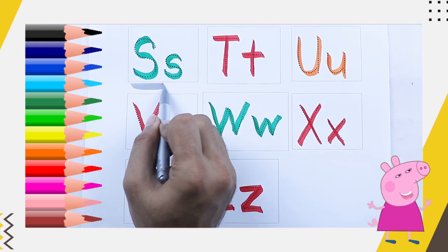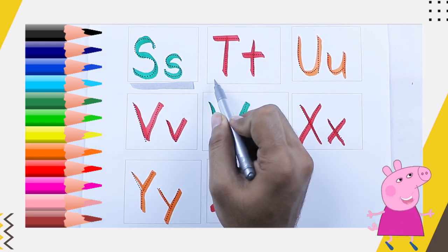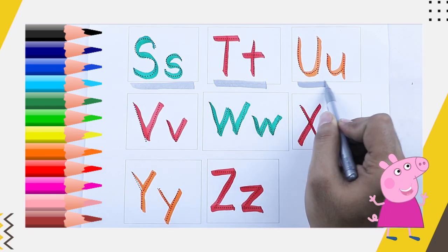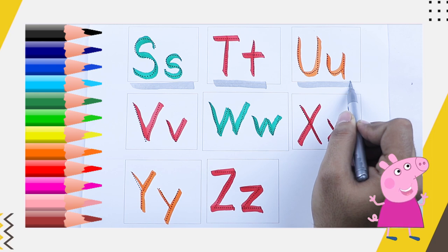Green color S, S for sheep, red color T, T for tiger, orange color U, U for umbrella.